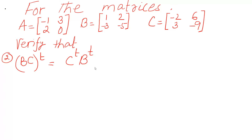Move on to the second question — this is for you. Same thing: instead of A and B, we have B and C whole transpose. In this way you will learn more. You have to solve this question: write down B, C, then multiply these two matrices — follow the same steps we did in question number one. At the end you have to take the transpose, then C transpose and B transpose — you have to prove the right hand side.